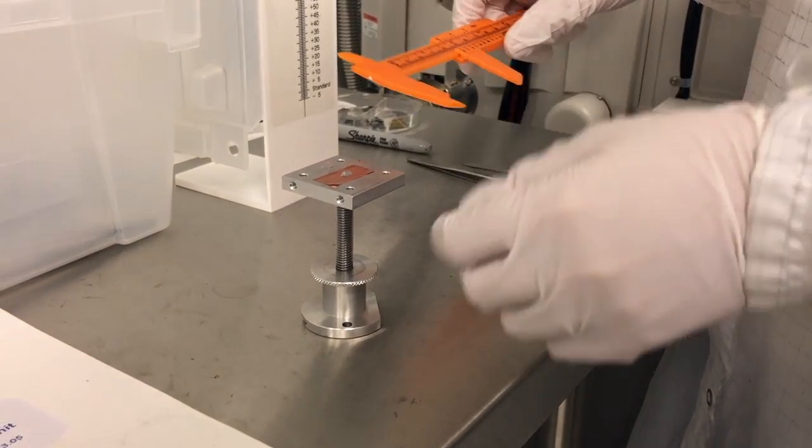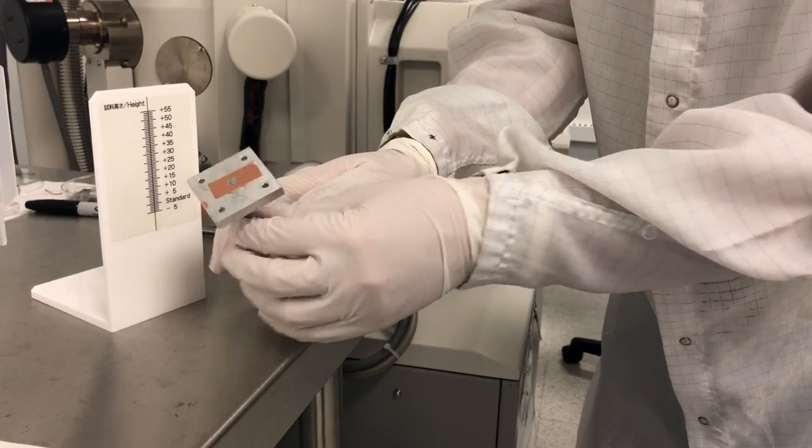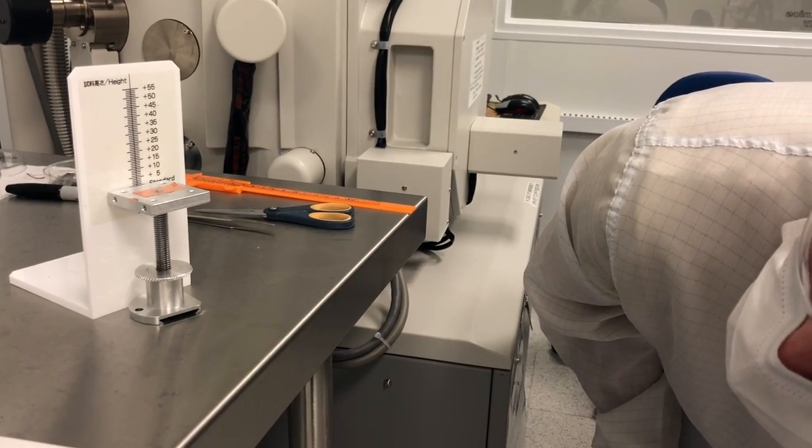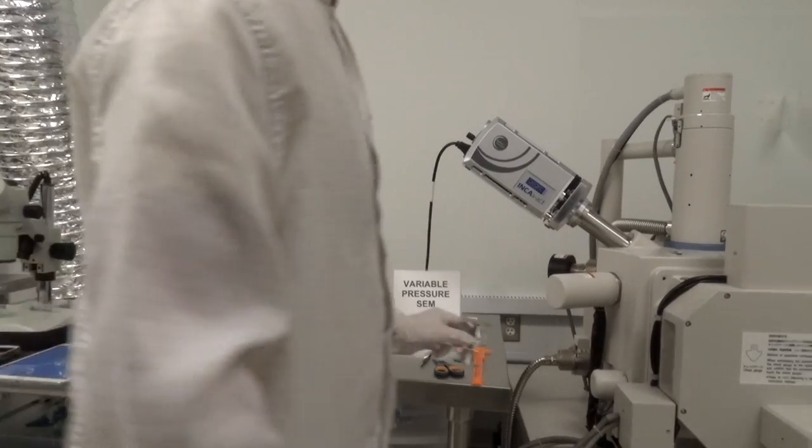When your sample is properly attached to the mount, measure the width of the stage as well as the height from the top of the sample. Measure width with the orange caliper and height with the height gauge. Open the specimen settings screen in the PC window and enter the measured height and width into the pop-up window.